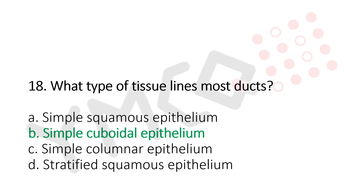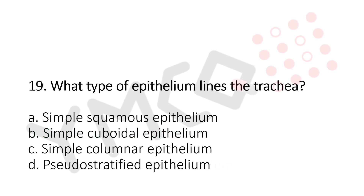Question 19: What type of epithelium lines the trachea? Option A: simple squamous epithelium. Option B: simple cuboidal epithelium. Option C: simple columnar epithelium. Option D: pseudostratified epithelium. The answer is Option D, pseudostratified epithelium.